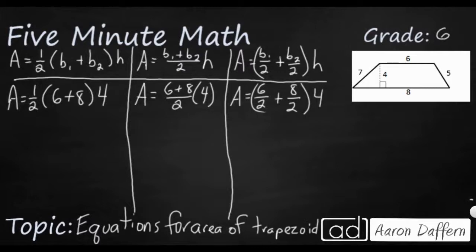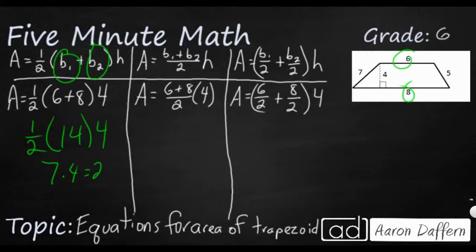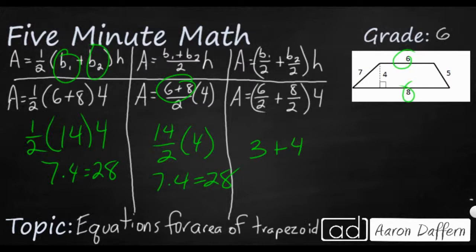Hopefully you had a chance to solve this equation yourself. I've got it set up three different ways here. So your b sub 1 and your b sub 2, that's going to be your 6 and your 8. So we're going to take one half. We're going to add those together. That's 14 times 4. So one half times 14 is 7. 7 times 4 looks like it's 28. Over here, we went ahead and added the 14 first and then divided by 2. So we've got 14 divided by 2 times 4. That is 7 times 4, also 28. In this last case, we separated out using the distributive property. We have 6 divided by 2. That's 3. We have 8 divided by 2. That's 4. Add those together. Times by 4, you get 7. Times 4, 28.